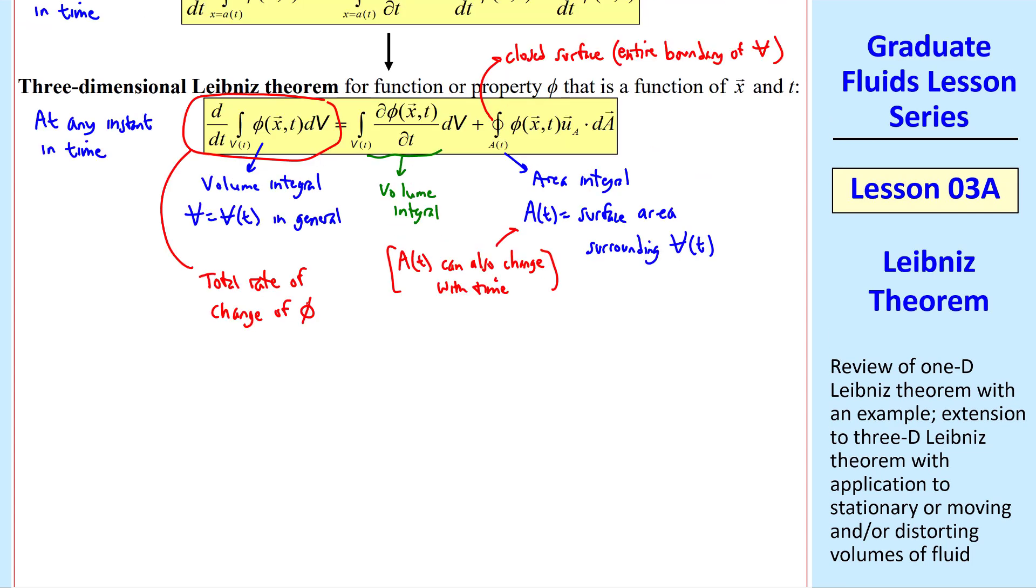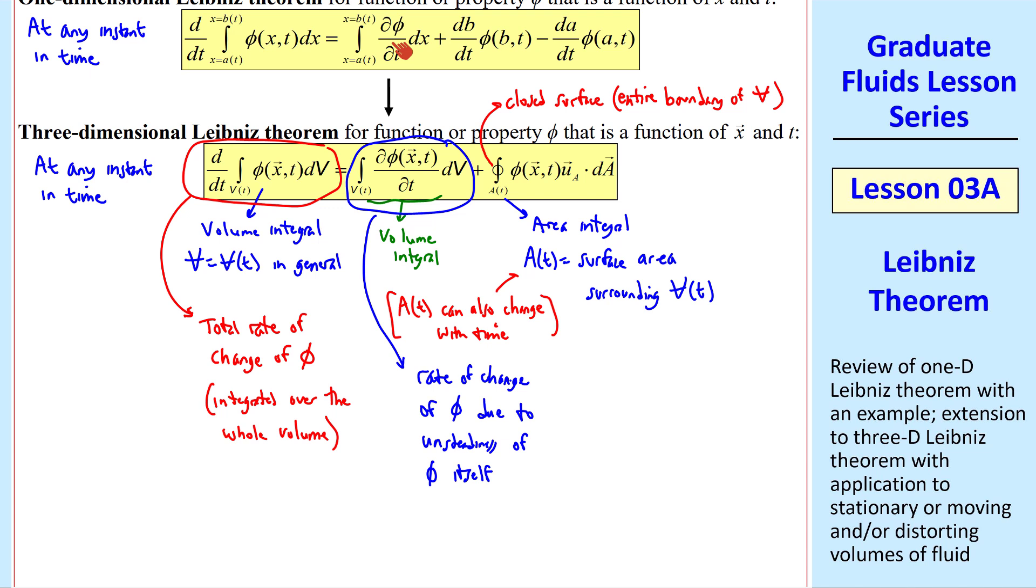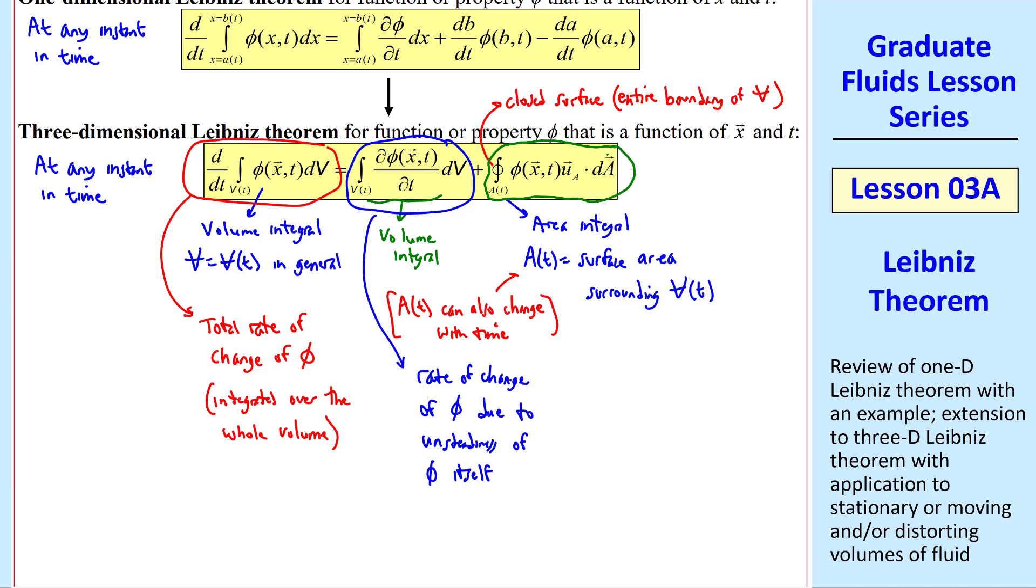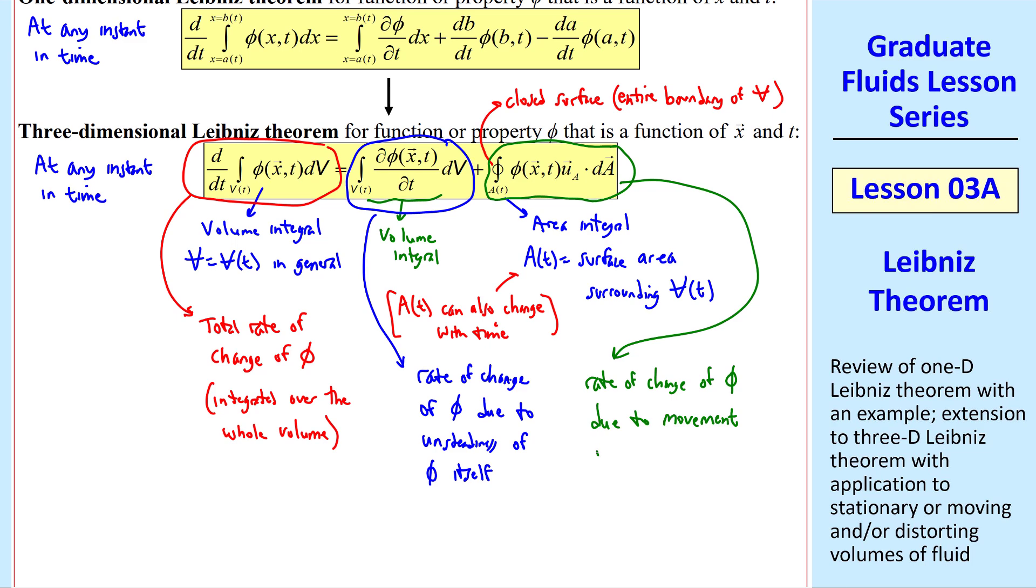Again, I'll label these terms. This term is the total rate of change of phi integrated over the whole volume. This term is the rate of change of phi due to unsteadiness of phi itself. Again, notice the del/del t term, similar to what we had in the 1D version, where we're taking the partial derivative of phi with respect to time. Now, since we're integrating over the entire area, we no longer split this last term into two parts. But it's an area integral, which is the rate of change of phi due to movement or distortion of the volume's boundary.